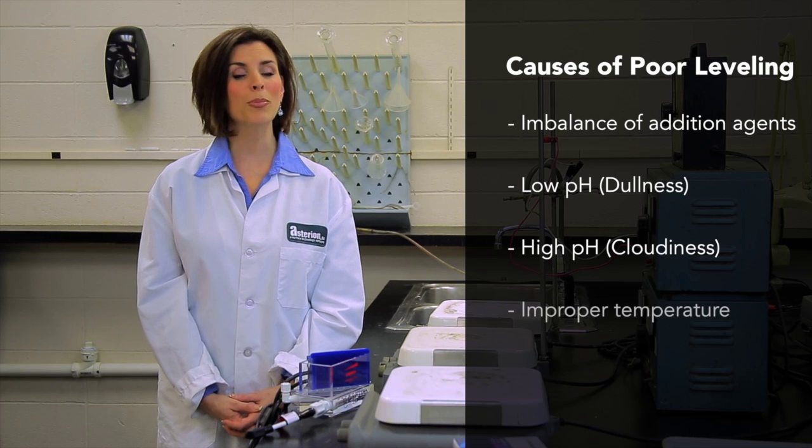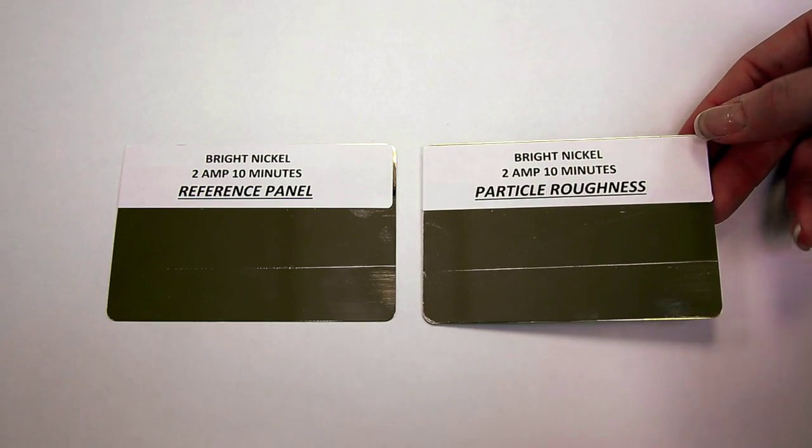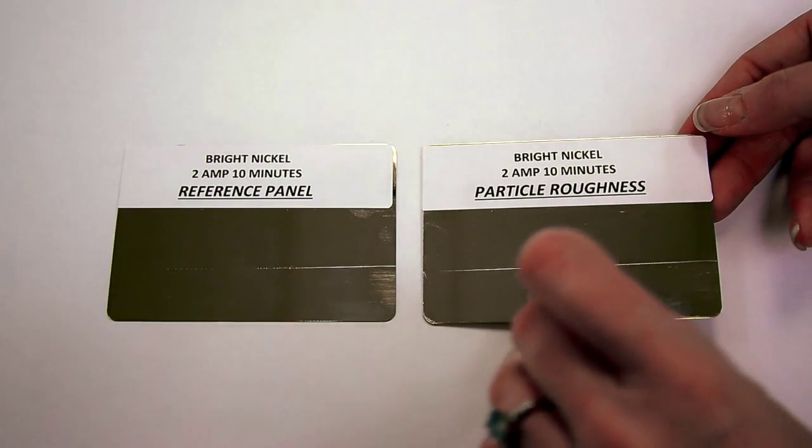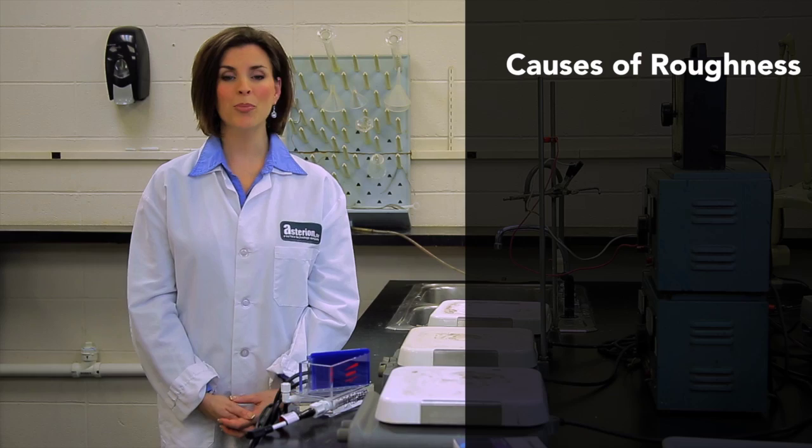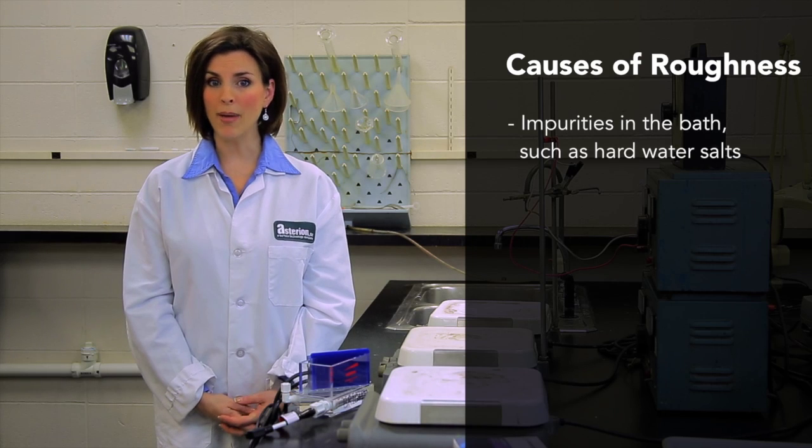This panel illustrates roughness. By running a coin over the panel, roughness can be felt even if it's difficult to see. The principal causes of roughness in a nickel plating bath are impurities in the bath such as hard water salts, imbalance of plating salts, and high pH.